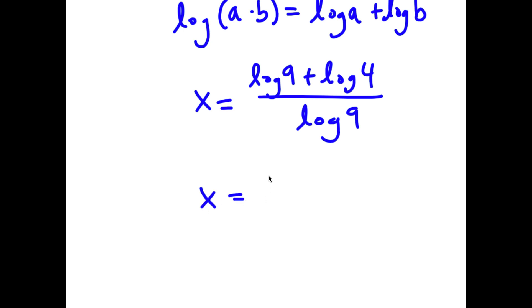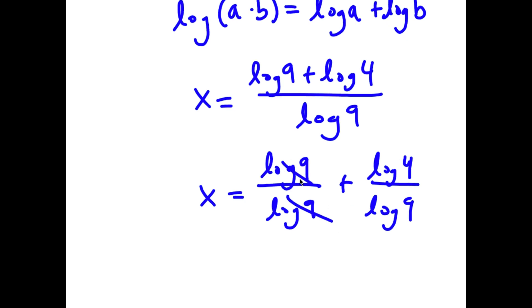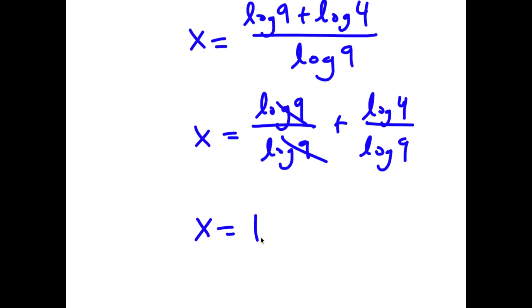This is equal to log 9 over log 9 plus log 4 over log 9. These two cancel out, and now I have x is equal to 1 plus log 4 over log 9.